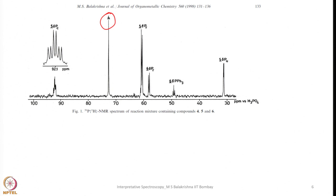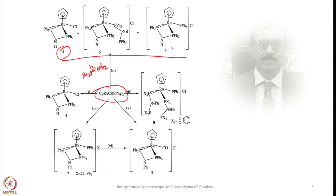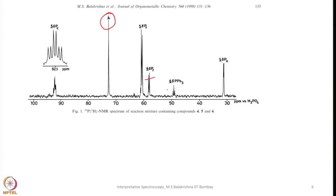Now let us look into the other products. In product 6, one triphenylphosphine is there and one bisphosphine is there. The bisphosphine chemical environments are identical and we have PPh3. By simple thumb rule using the 2nI+1 rule, we can anticipate a triplet for triphenylphosphine and a doublet for the bisphosphine. You can see here a doublet and a triplet — this is for triphenylphosphine and this is for the chelated two-phosphorus motif of bis(diphenylphosphino)amine.